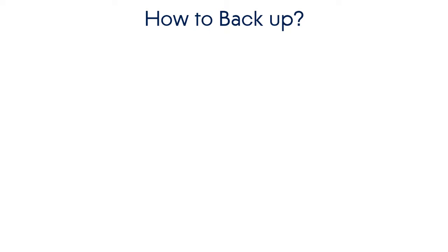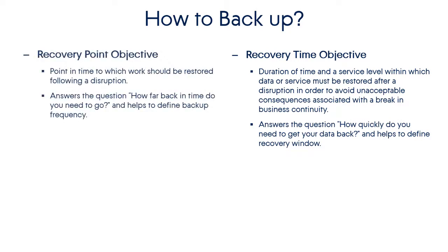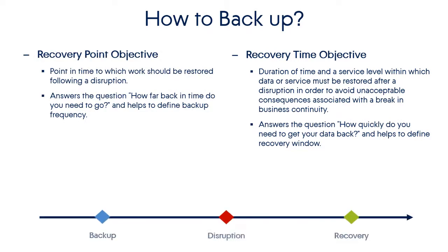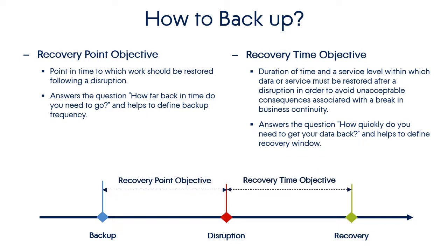Another important concept to understand is RTO, or recovery time objective, and RPO, recovery point objective. Recovery point objective is how far back in time you're willing to go with the amount of data that you've lost — how long since the last backup. The more frequently you perform your backups, the less data you're going to lose. If you take it once a month, you might lose a whole month's worth of data; if you take it every day, you'll lose a day's worth. Recovery time objective is how far in the future it will be before your systems are back online.